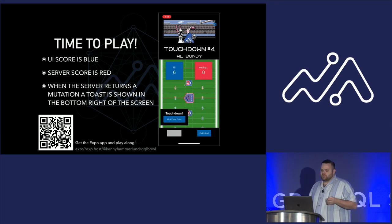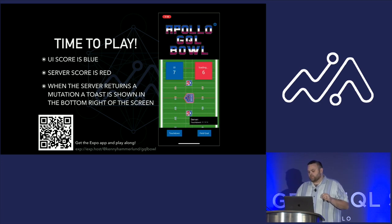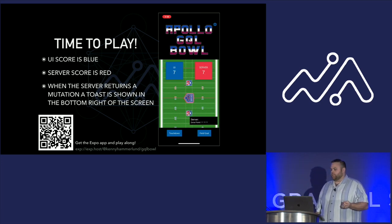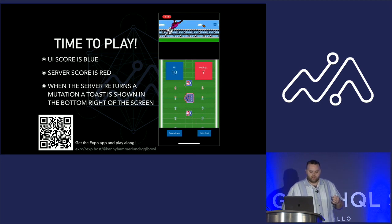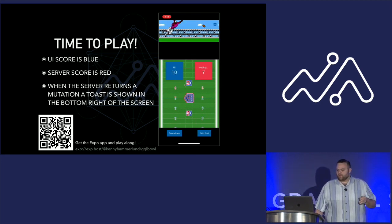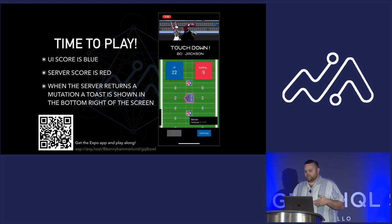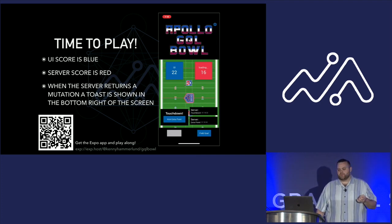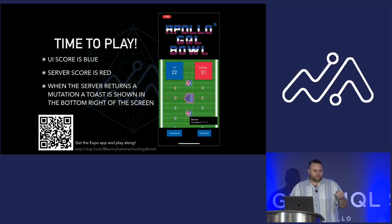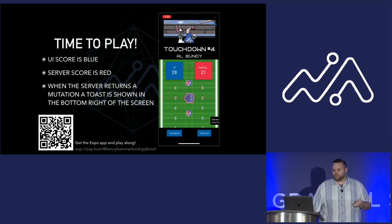Bo is going to be scoring a few touchdowns here. On the left you see the UI score — the UI is in blue and that's optimistically being updated. As the server returns its values, it's going to be updating on the right, and in the bottom you will see them come back. We're going to be able to continue to play our game while we're waiting for the server to respond. You can imagine if we had to wait for the server responses, we'd still be on touchdown two, sitting around waiting. But in this case, we're almost done with our game.